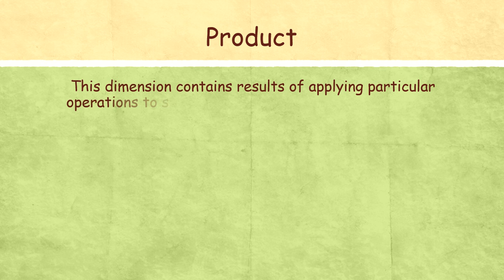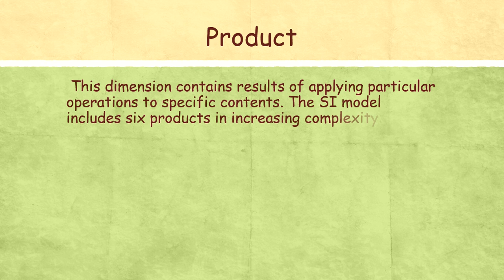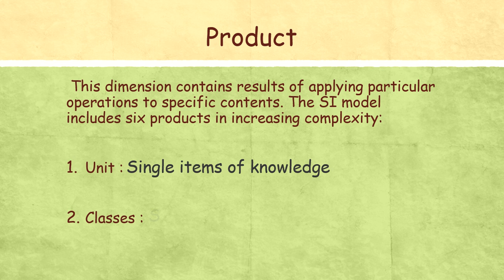The third dimension is Product. Product refers to the form in which information is processed by the respondent. It has basically six products. First one is Unit, a single item of knowledge. Second is Classes, a set of units sharing common attributes.